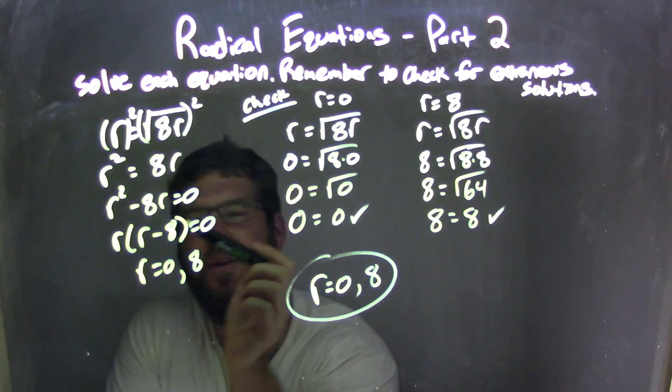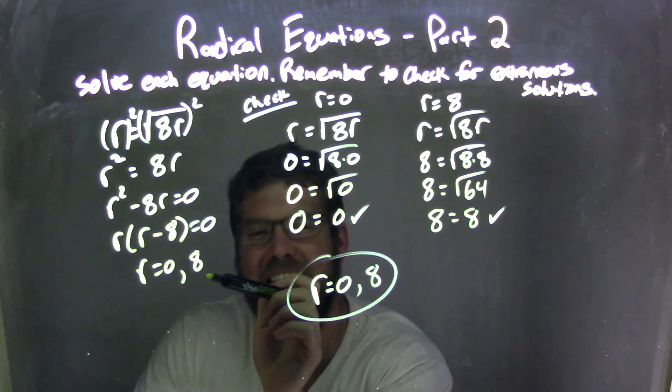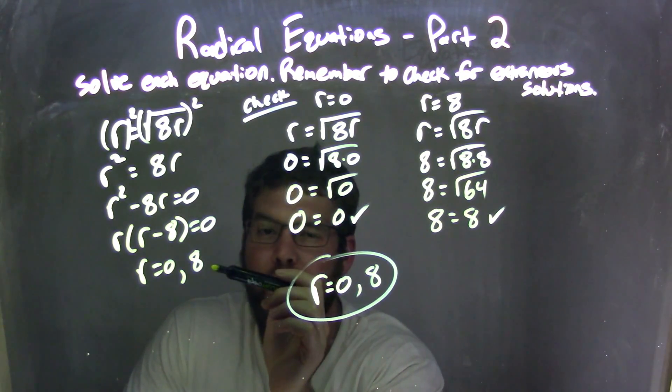And I set both parts equal to 0, giving me r equals 0 and 8. All in one breath right there.